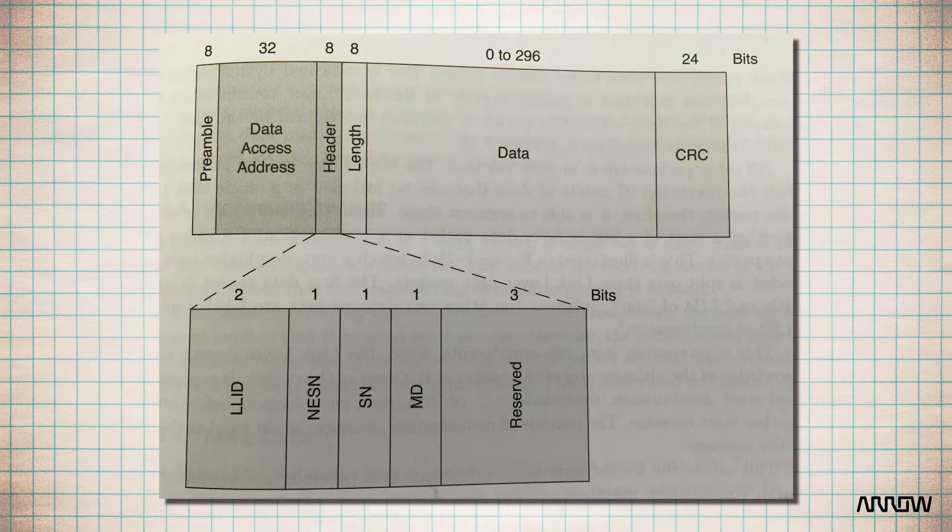For a data packet, the header is split into four fields: the Logic Link Identifier (LLID), the Sequence Number (SN), the Next Expected Sequence Number (NESN), and finally the More Data (MD) section.